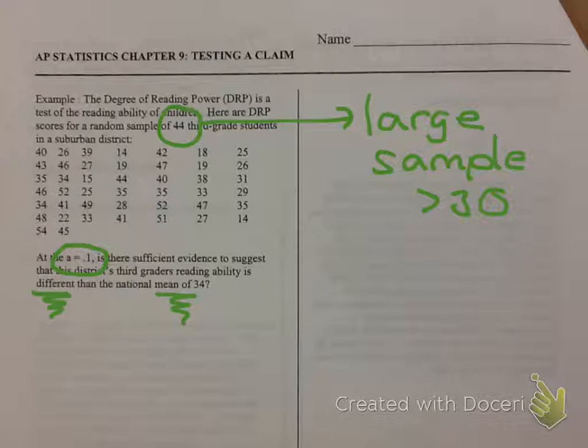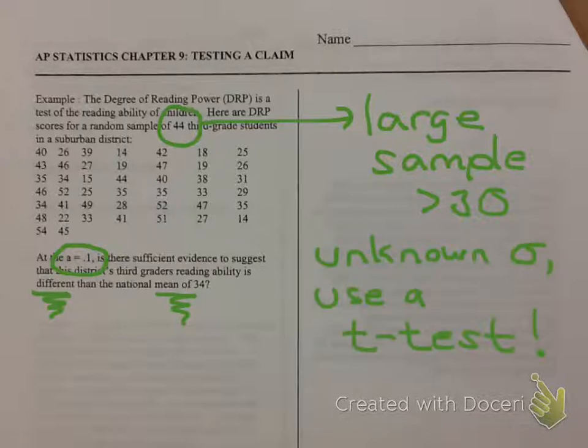One last observation: notice what we're not given. We don't know the population standard deviation, and that means we're going to use a t-test here, just like we used a t-interval in the last chapter.